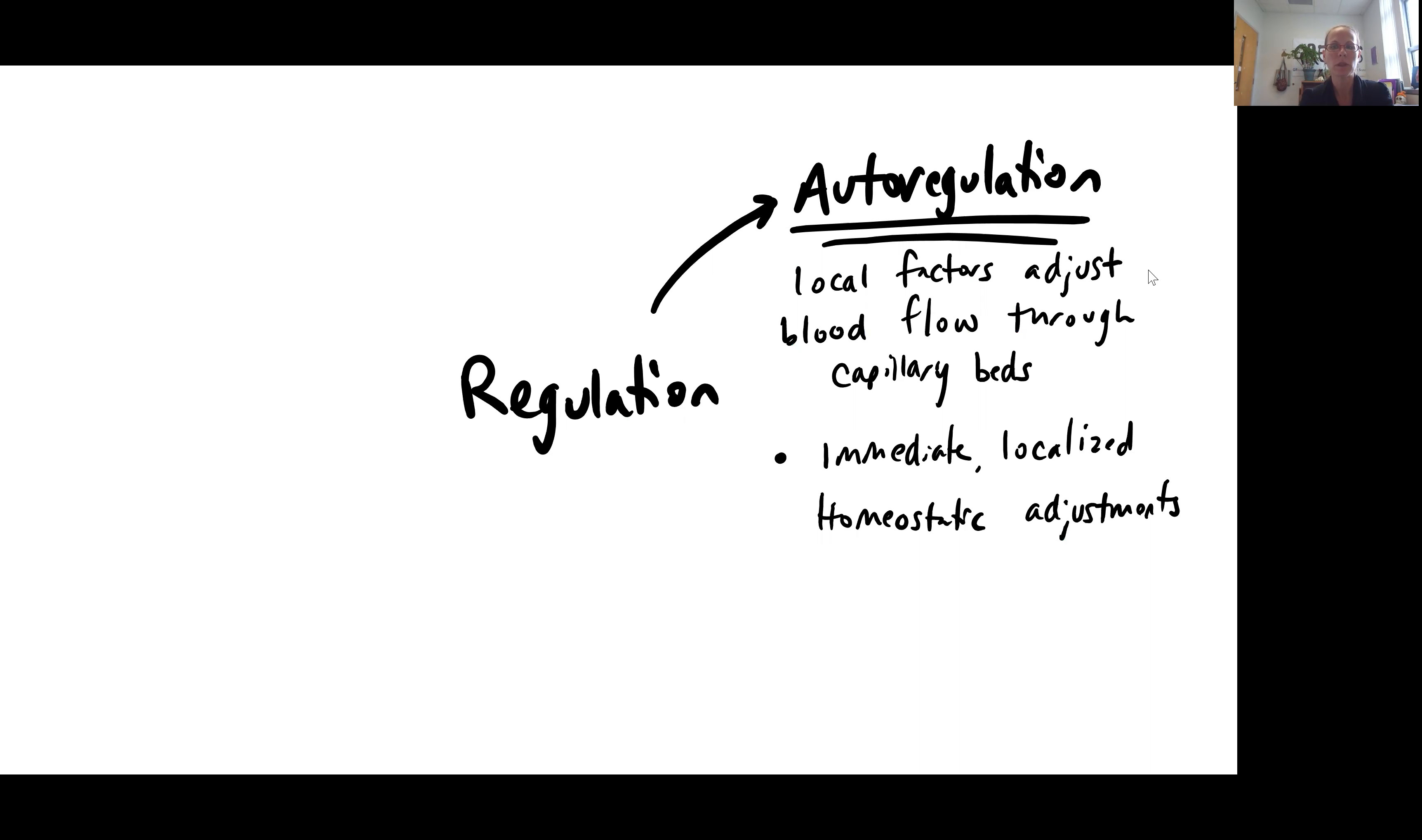So, we can adjust blood flow through capillary beds. If you look in your text, you have a nice diagram showing you the anatomy of a capillary bed. And you have these little capillary sphincters that can actually close off blood flow to a capillary or dilate to increase blood flow to a capillary. So, you can have a lot of control right there at each of your capillary beds. In the case of the autoregulation, we're making these immediate little localized adjustments to that capillary bed to make sure we're getting adequate blood flow to that area.